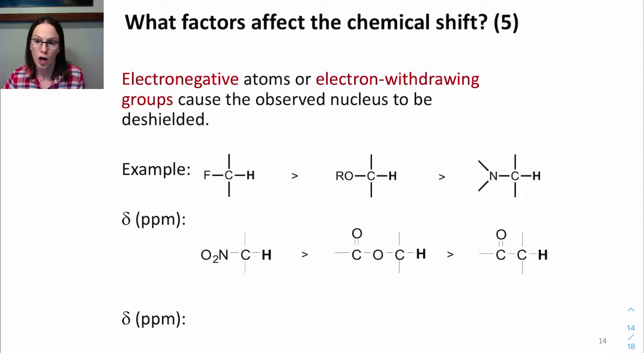For example, proton on a carbon next to a fluorine atom would come in around 4.3 ppm. Proton on a carbon next to an oxygen is around 3.5. Proton on a carbon next to a nitrogen atom would be around 2.5. And we'd have a similar case with these electron-withdrawing groups.